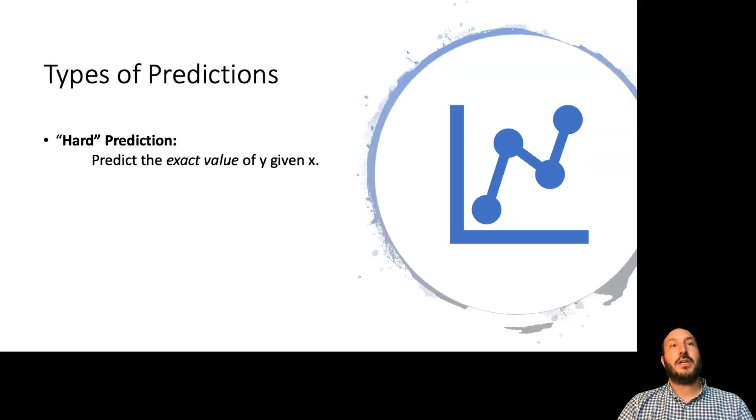The first thing to know is that there are several different types of predictions one might make. The first we'll talk about is what I call a hard prediction, where you're trying to predict the exact value of Y given X. An example of this might be an image classification task where you're given an image of a cat and you expect your model to spit out the answer that this is unambiguously a cat.